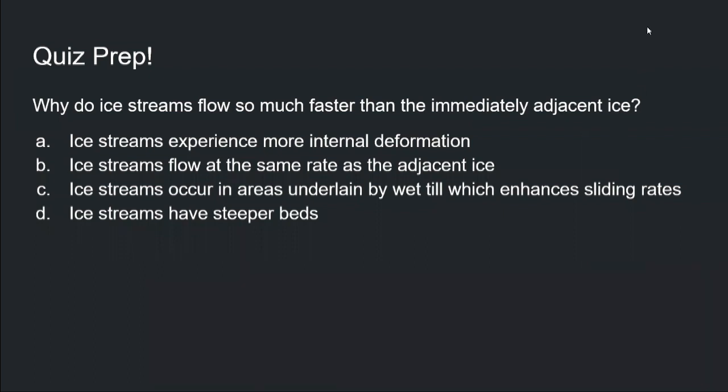Small quiz prep again. Why do ice streams flow so much faster than immediately adjacent ice? I'll leave you a few seconds for that. The right answer is answer C: ice streams occur in areas underlain by wet till, which enhances sliding rates. It's not answer A because internal deformation is not the main factor for that fast flow. Ice streams do have more internal deformation in the sense that they flow much faster, but that's not the reason why they're going faster. Answer stating ice streams flow at the same rate as adjacent ice is not true — they are much faster. And ice streams having steeper beds is also not necessarily true; those places usually have the same kind of slope and you still have a much faster ice flow at a specific point.